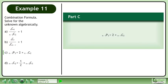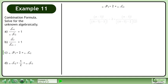In Part C, find n in n-1p3 equals 2 times n-1c2. Expand the permutation and combination. Simplify.